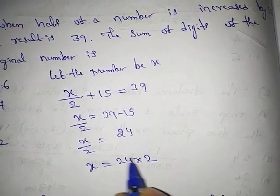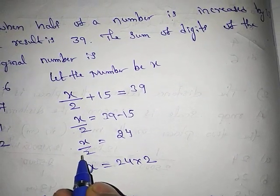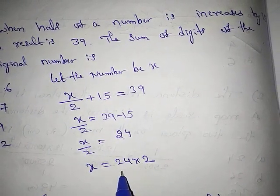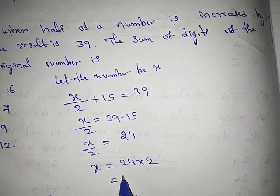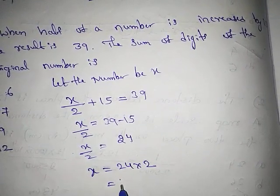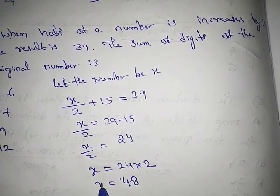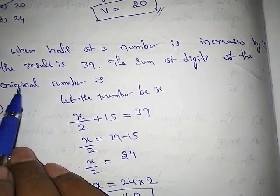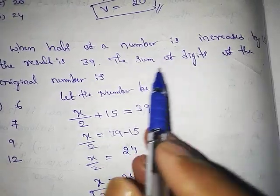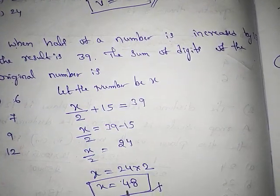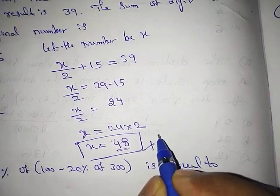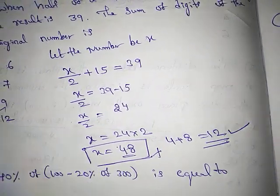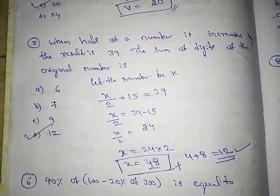x/2 = 24, so x = 24 × 2 = 48. The original number is 48. But they are asking for the sum of the digits of the original number: 4 + 8 = 12. The answer is 12, which is option D.